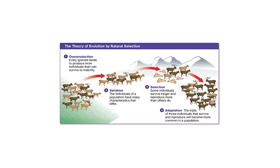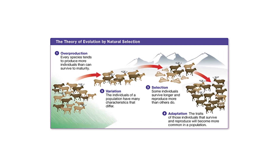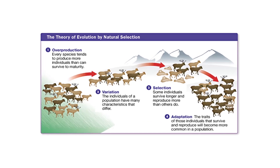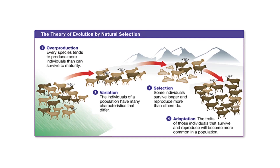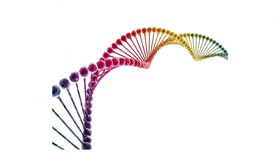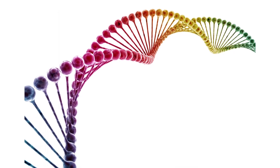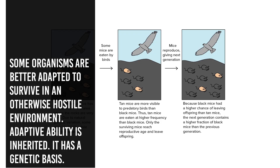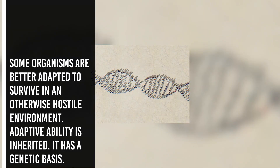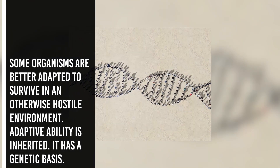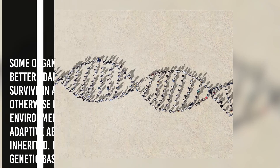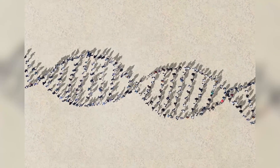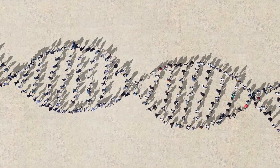For the same thing to happen in a fish or fowl would take millions of years, as the lifespan of these animals are in years. And hence, there must be a genetic basis for getting selected and to evolve. Another way of saying the same thing is that some organisms are better able to adapt to survive in an otherwise hostile environment. The adaptive ability is inherited — it has a genetic basis. Fitness is the end result of the ability to adapt and get selected by nature.